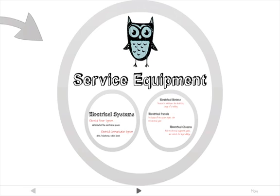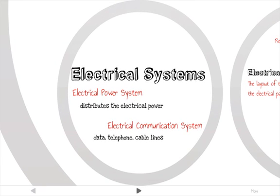There are likely two electrical systems in every building. There is the electrical power system, which distributes electrical energy through the building, and the electrical communication system, which sends information via telephone, data, and cable lines. The electrical communication system is becoming somewhat obsolete because we've gone pretty wireless. There aren't a lot of people using telephone lines, but you still need to provide them in every room.